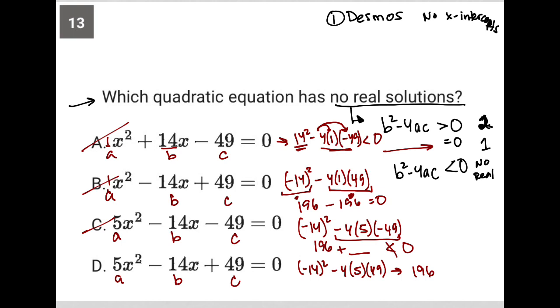But then negative 4 times 5 is 20 times, sorry, negative 20 times positive 49 is negative 980. And yes, 196 minus 980 is less than 0. So choice D is the correct answer.